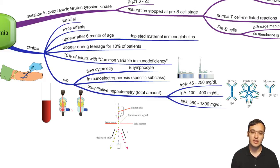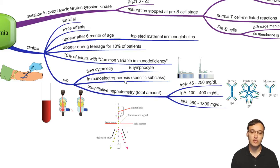In the lab, we can use different methods to measure B cells or immunoglobulins. Quantitative nephelometry measures the total amount of immunoglobulins in the blood. Immunoelectrophoresis measures the specific subclasses. Flow cytometry measures the B lymphocytes themselves.